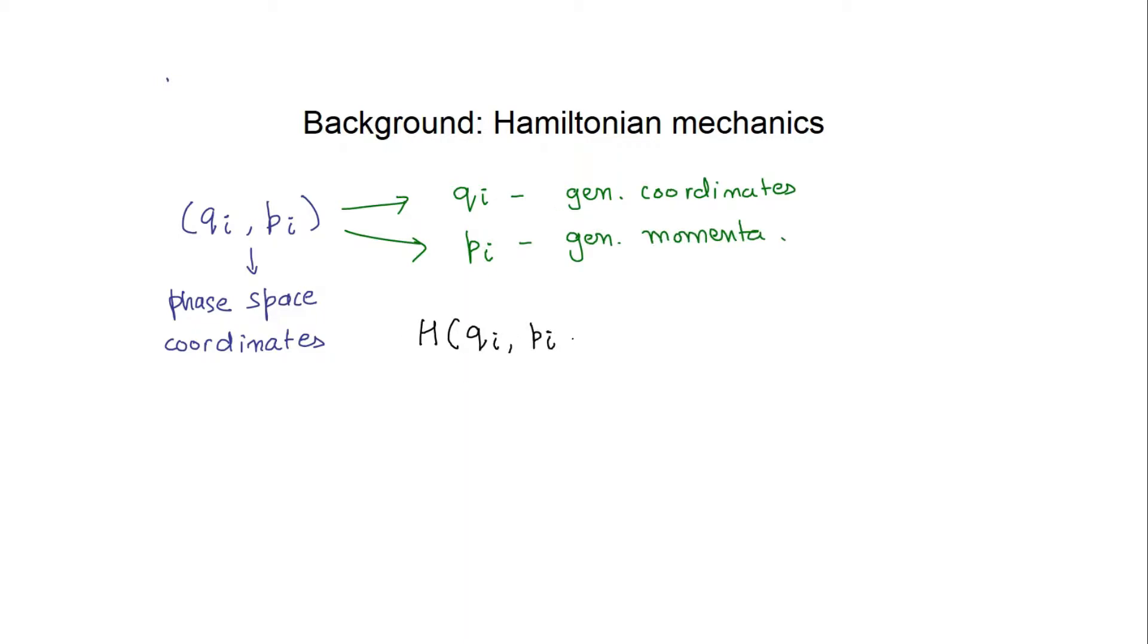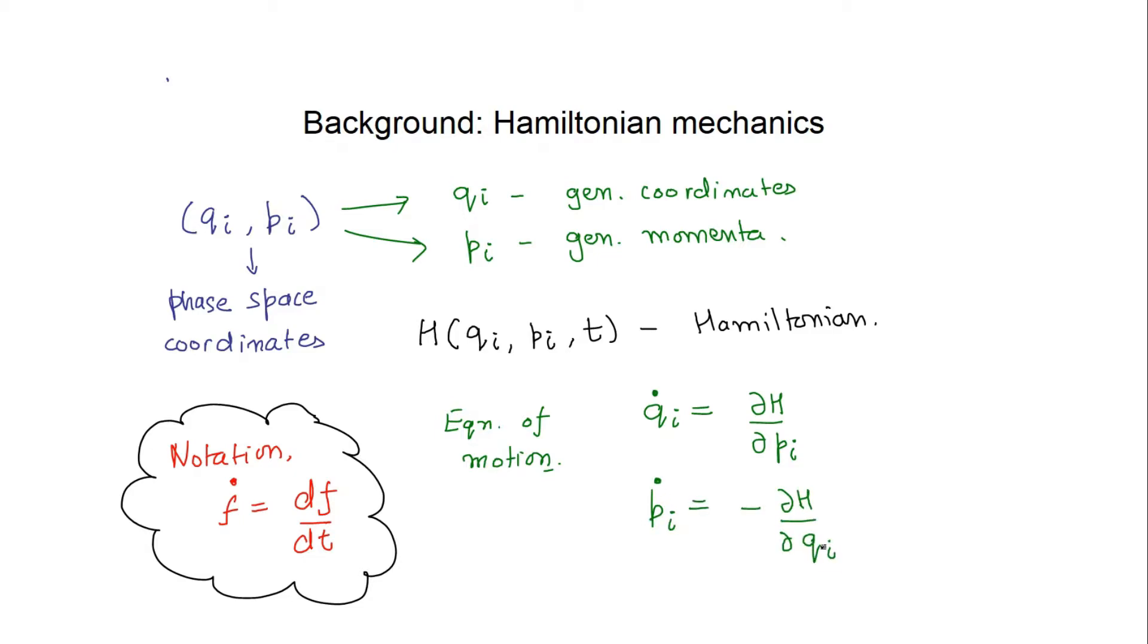The Hamiltonian of the system is a function of all the generalized coordinates, generalized momenta, and time. The time rate of change of these coordinates and momenta can now be written in terms of the partial derivatives of the Hamiltonian. There are two equations for each set of P and Q and are called Hamilton's equations of motion.